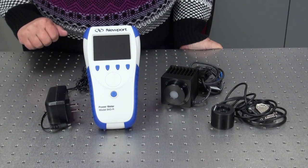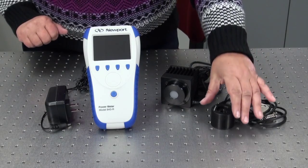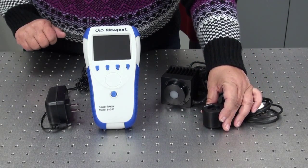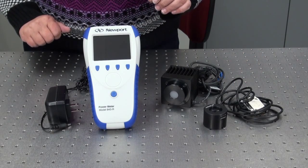The 843-R power meter is compatible with all 918D series photodiode detectors as well as the 818 series photodiode detectors with the DB15 type connector option.